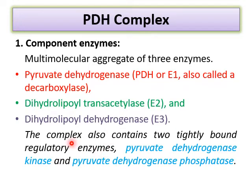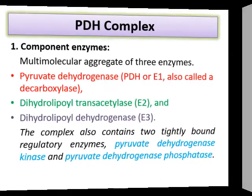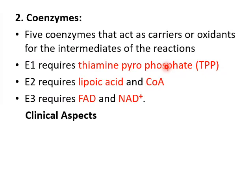The PDH complex also includes two regulatory enzymes: pyruvate dehydrogenase kinase and pyruvate dehydrogenase phosphatase. Five coenzymes are required by the PDH complex.